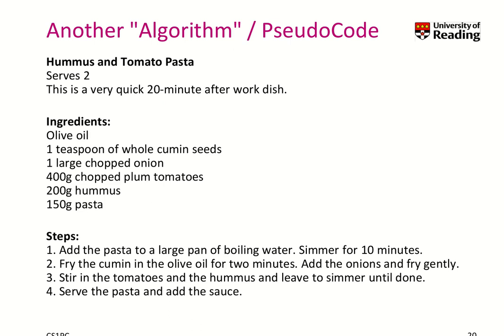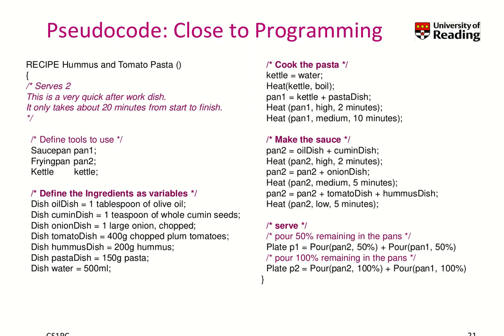Let's talk about our pseudocode algorithm for hummus and tomato pasta. We can formulate this closer to a programming style. We say this is a recipe called 'hummus and tomato pasta,' then we define tools to use: a saucepan, a frying pan, a kettle. Then we define the ingredients as what we will later learn as variables — our input. Then we say the kettle is filled with water, we heat the kettle until it boils, heat the pan with high temperature for two minutes, and so on. We see some comments, like 'make the sauce,' and finally you want to serve. There are many ways of representing pseudocode.